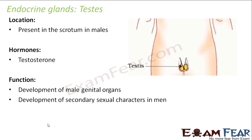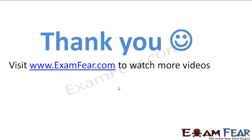Let us look at the location of the testis. It is located in the scrotum in males — here you can see the scrotum as two bulb-like structures, and inside that are the testes. With this, we have discussed all the endocrine glands present in the human body, the hormones they secrete, and the functions they perform.